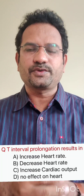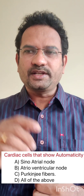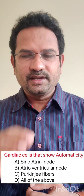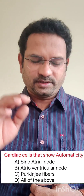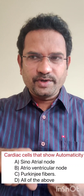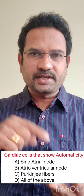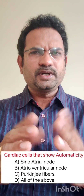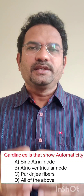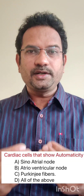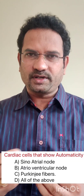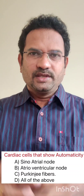Let us move on to the next question. The next question is: cardiac cells that show automaticity. Options are: sinoatrial node, atrioventricular node, Purkinje fibers, all of the above. Let us understand this word automaticity.